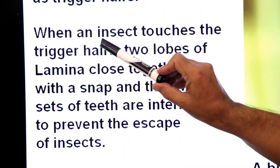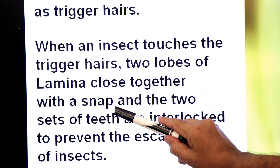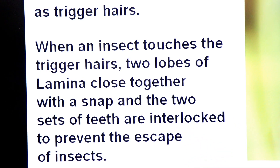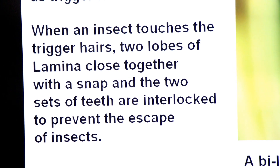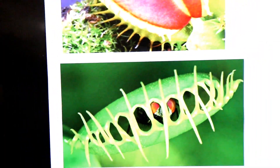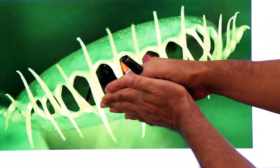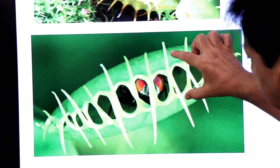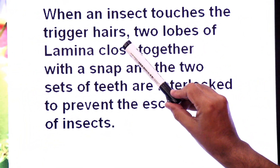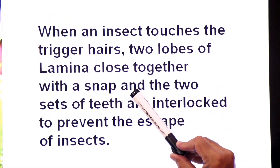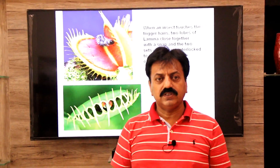When an insect touches the trigger hairs, the two lobes of the lamina close together with a snap. The two sets of teeth interlock to prevent the escape of the insect. Looking at the diagram: as the insect lands and touches the sensitive hairs, both lobes shut down and teeth interlock. The insect is trapped inside and digested. After digestion, the trap opens again.